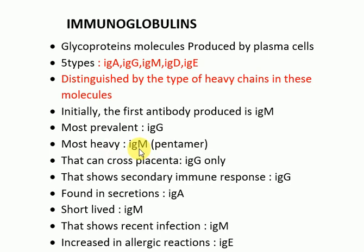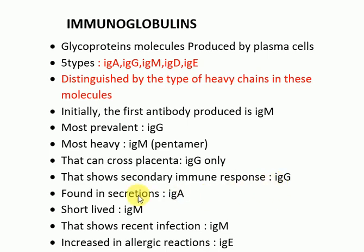You can memorize IgM as a pentamer by picturing five corners — one, two, three, four, five. It is also the heaviest. The antibody that can cross the placenta is IgG. IgG also shows the secondary immune response — once an antigen enters the body, the second time the same antigen returns, IgG mounts the secondary immune response.